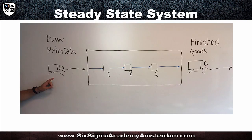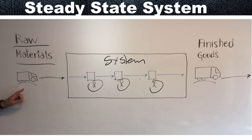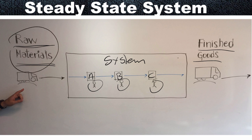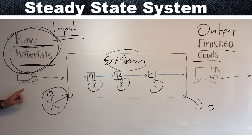Little's Law must be applied in a so-called steady state system. A steady state system is one where raw material enters a system — say a factory with three people doing sub-processes A, B, and C — and all raw materials that enter also exit as finished goods. No input is lost within the system. For instance, guests that enter your hotel also exit your hotel, and guests at a restaurant also exit the restaurant.